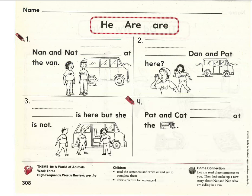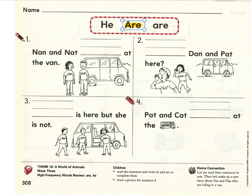We're going to be reviewing some sight words. If you feel like you can do this page without my help, you're welcome to stop the video and work on this on your own. For number four, please make sure you draw a picture and match the sentence. If you want to still work with me, let's get started. Let's begin by reviewing the sight words in our word bank. Read the words after me: He, Are. We have three words to use. Two of the words are the same, but one starts with a capital letter and the other is lowercase. The only reason that word is capitalized is because it's the beginning of a sentence. Let's pay close attention to that as we work together today.